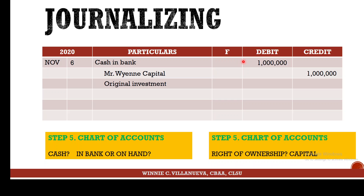Should the amount be written right to left or left to right? You look at the place value — you write from right to left. As for the folio, also called post reference, that's used when we post. When should you post? Your record should always be updated — preferably on a regular basis, most probably on a daily basis.